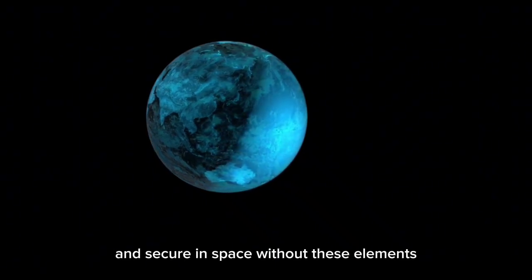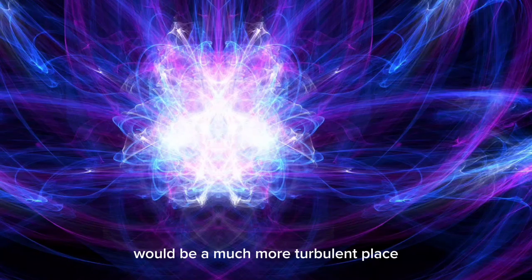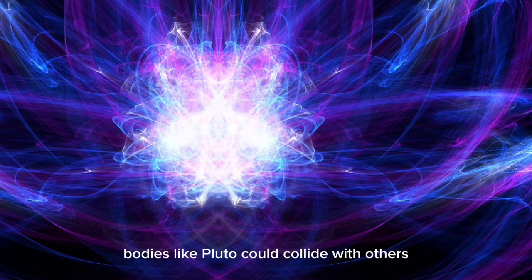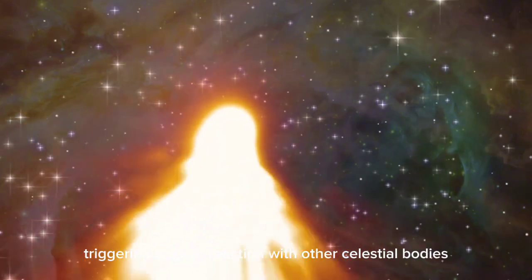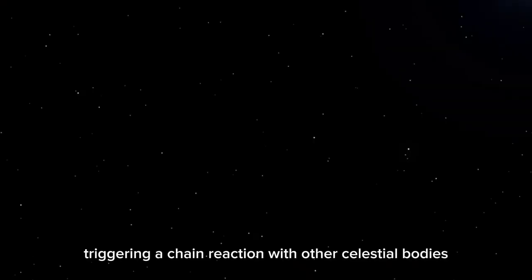Without these elements, the solar system as we know it would be a much more turbulent place. Bodies like Pluto could collide with others or be ejected from their stable orbits, triggering a chain reaction with other celestial bodies.